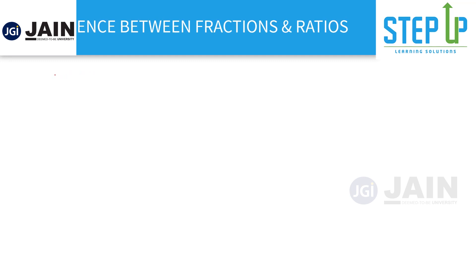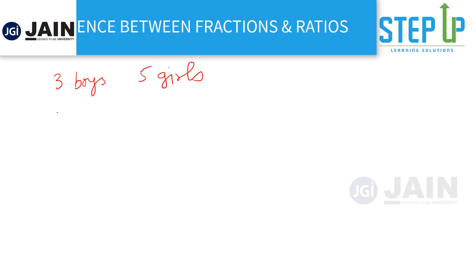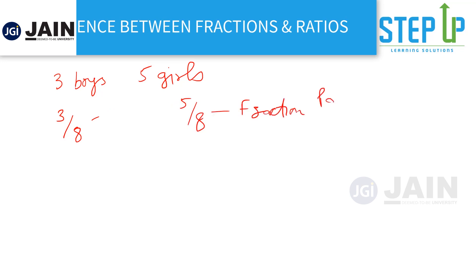So let's say we have three boys and five girls in a class. Technically speaking, fractions is part to whole. That means if I ask you what is the fraction of boys in the class, you can say three by eight — part boys to whole, which is three plus five. Or if I ask you what is the fraction of girls in the class, it is five by eight. So fractions is nothing but part to whole.